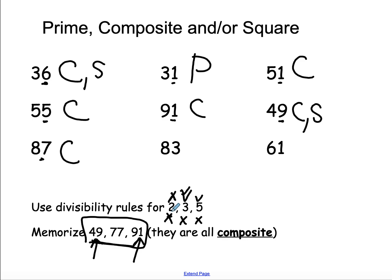83, not an even number, so it's not divisible by 2. 8 plus 3 is 11, not divisible by 3. It does not end in a 5 or a 0. It's not on my memorized list. It is prime.